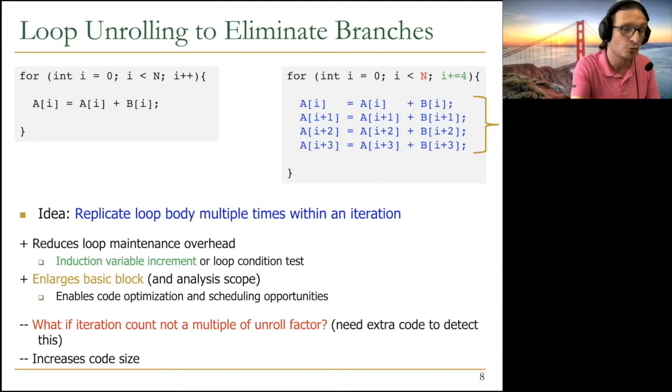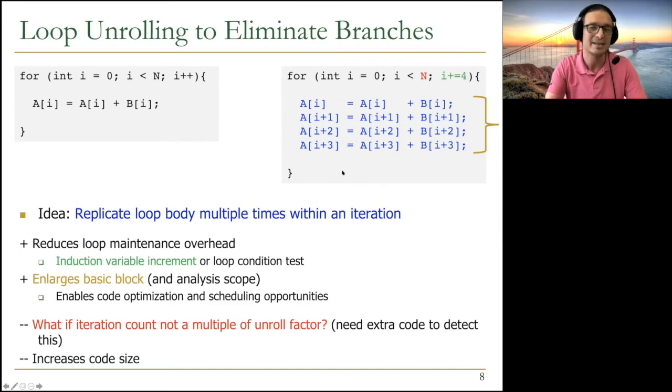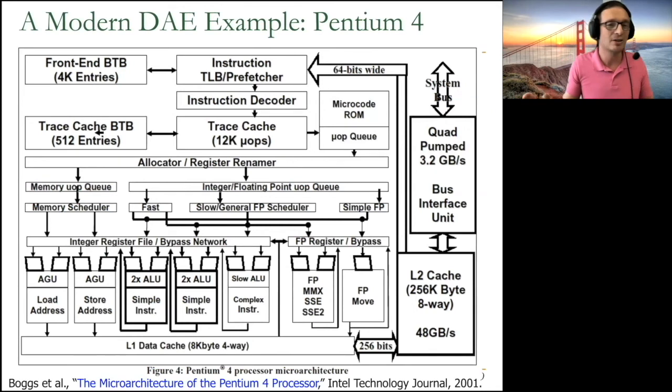And they talk about loop unrolling a lot in decoupled access and execute, and how it improves the performance of this Astronautics CS1 processor. But it's important for you to think about it going forward, especially if you're interested in topics like compilation and hardware. This is a very basic compilation mechanism. Let me give you the impact of decoupled access and execute in real processors, and then we will be done.